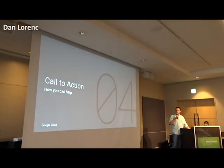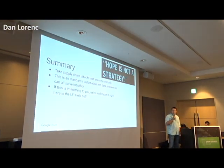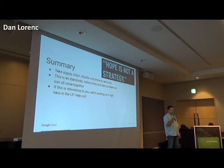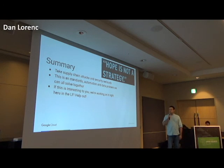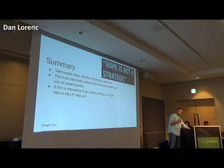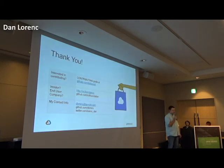So how can people help and how can we fix this together as an industry? The summary is that we all need to start taking supply chain attacks and open source software security seriously. We can't trust that everyone else is looking out for these things — we all have to take control of the software and dependencies we're using. If we want to fix this as an industry, this is a standards, automation, and data problem that we can solve if we work together. These attacks are rising every day, and if this interests you, we're working on it right now in the Linux Foundation — please reach out and get involved. Thank you.